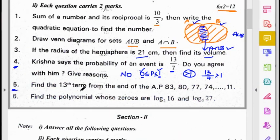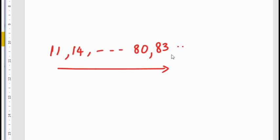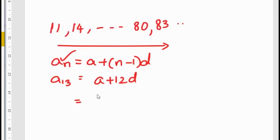Fifth question: find the 13th term from the end of the AP 83, 80, 77, 74, ... up to 11. We arrange the numbers in reverse order: 11, 14, ..., 74, 77, 80, up to 83. After arranging in reverse, we use the nth term formula: A plus (N minus 1) into D. The 13th term is given by A plus 12 into D.